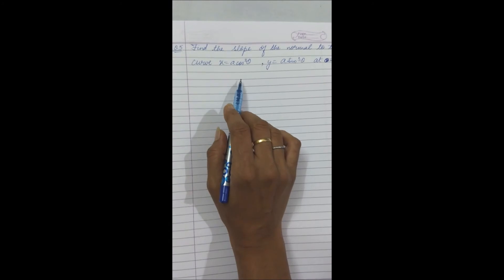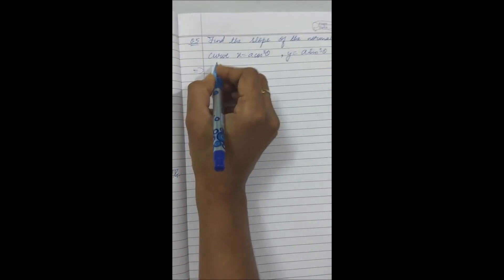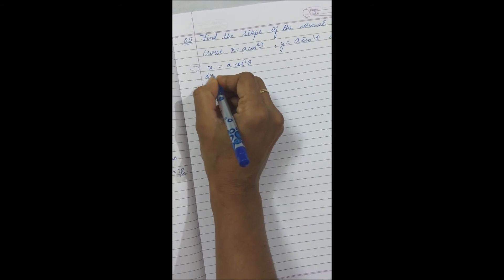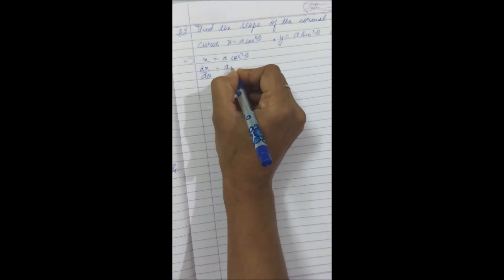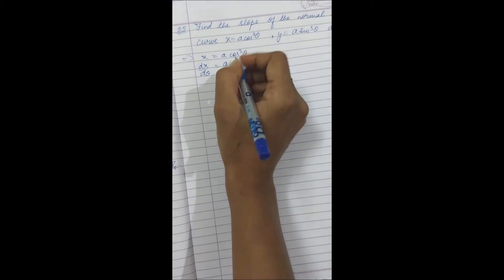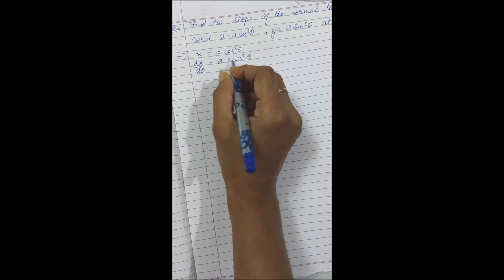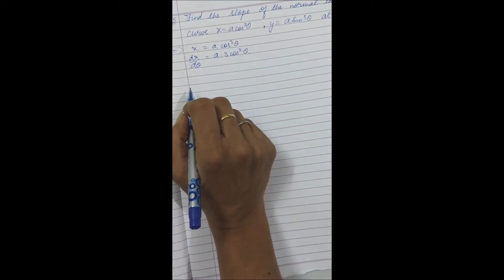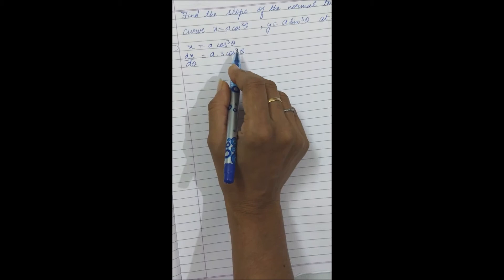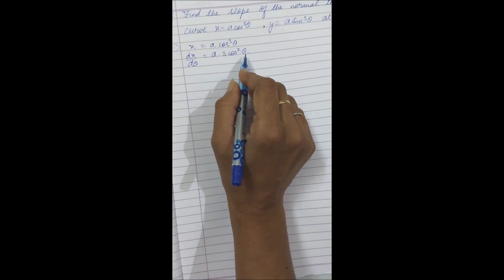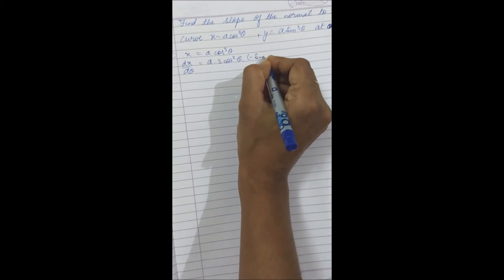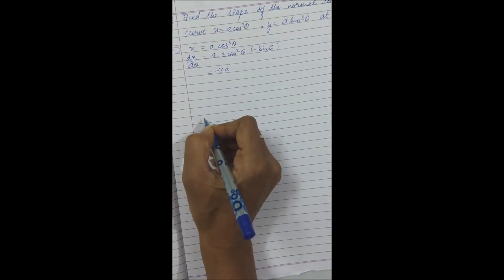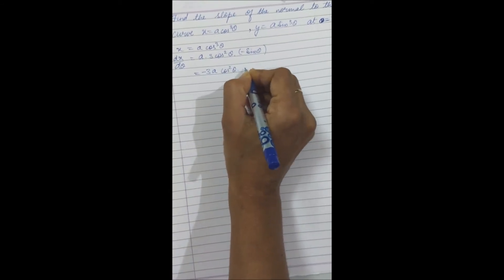First, differentiate x = a cos³θ with respect to θ. dx by dθ: a is constant, and for cos³θ, 3 comes forward giving 3 cos²θ, then the derivative of cos θ is minus sin θ. So dx by dθ = minus 3a cos²θ sin θ. Now for dy by dθ: y = a sin³θ, so 3 comes forward giving 3 sin²θ, then derivative of sin θ is cos θ. So dy by dθ = 3a sin²θ cos θ.